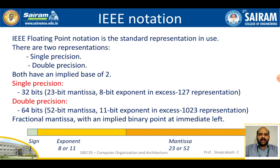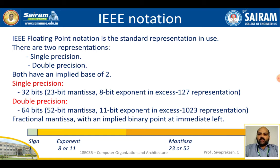Now let's move to the last topic of this first module: IEEE notation. IEEE notation is a standard representation for floating point numbers. There are two representations: single precision and double precision. Both are based on a base-2 (binary) system. Single precision uses 32-bit data.